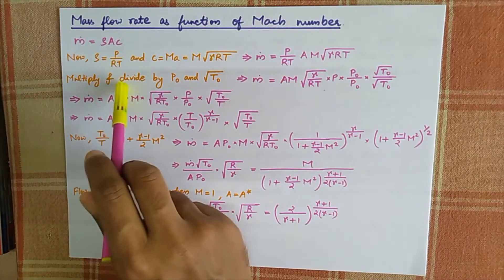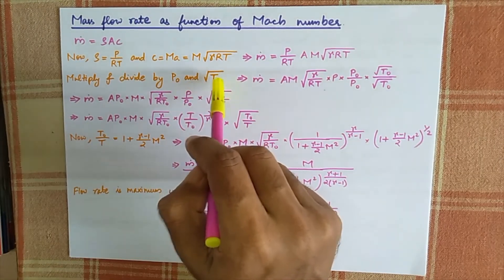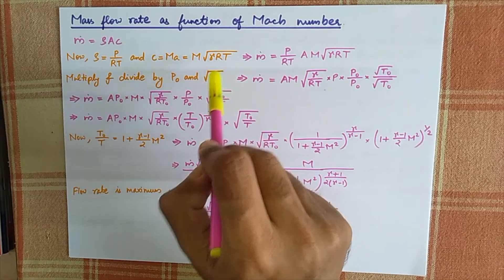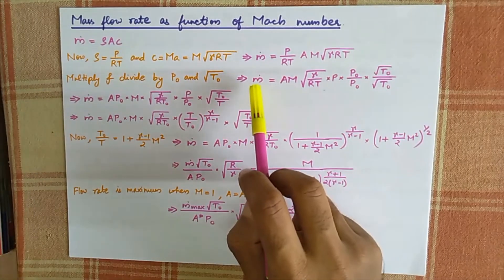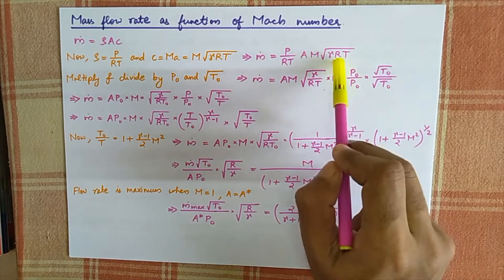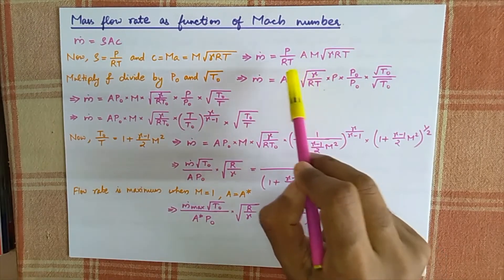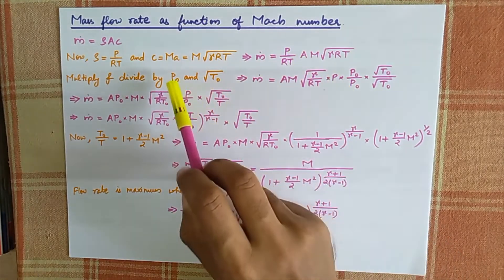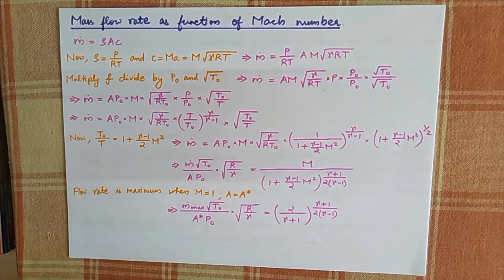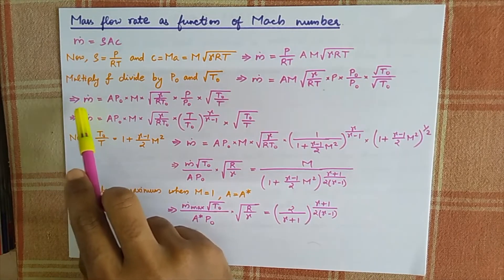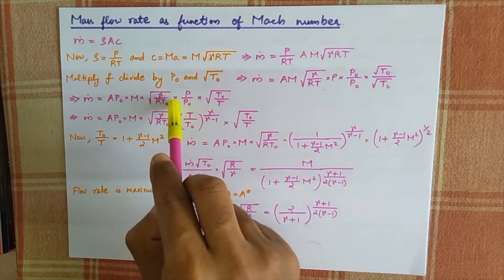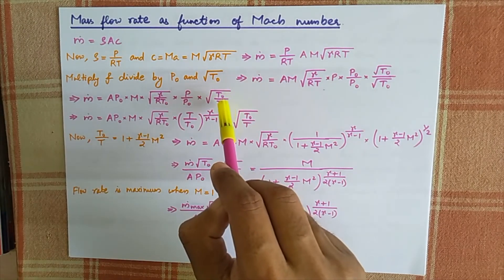Next step: multiply and divide by p0 and the square root of t0. So we introduce p0 divided by p0 and square root of t0 divided by t0. This gives m-dot equal to A times p0 times M times the square root of gamma divided by R times t0, multiplied by p divided by p0, times the square root of t0 divided by t.